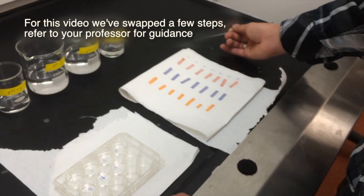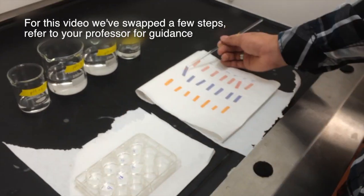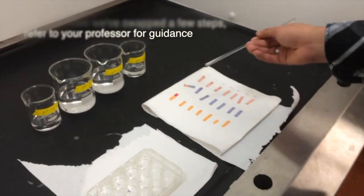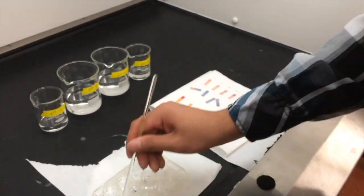Using a glass stir rod, transfer one drop of each solution to a piece of red litmus paper, blue litmus paper, and pH paper. Remember to rinse the rod with deionized water between the solutions.